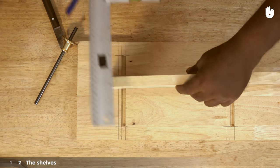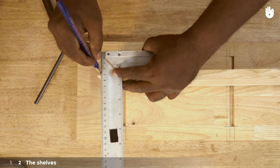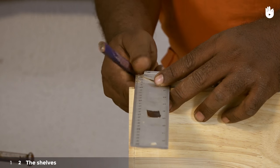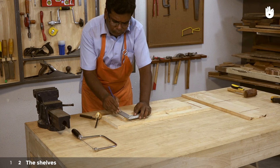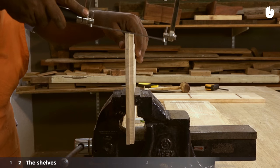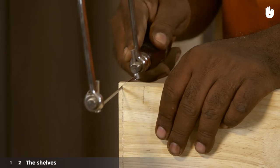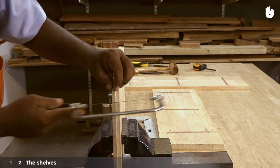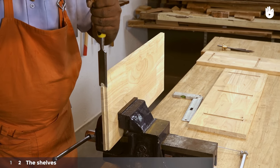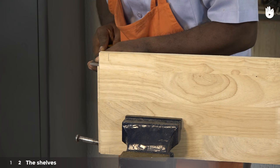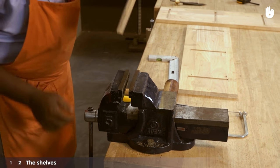Use a tri-square to extend the lines. Clamp the shelf and cut the extra portion from the tenon using a coping saw. Clean it up with a chisel and a mallet. Do the same for all the tenons.